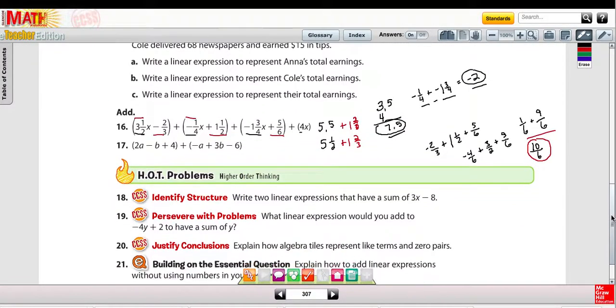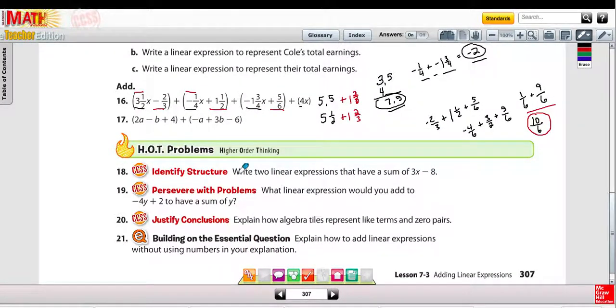Last problem, number 307, number 19, the higher order thinking problem. It says, what linear expression would you add to negative 4y plus 2 to just be left with y?